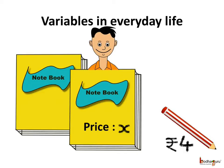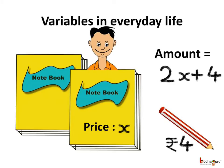assume you bought two notebooks and a pencil costing rupees 4. As we don't know the price of a notebook, let's assume the price is x rupees. Since the price of one notebook is x, we can say the price of two notebooks is equal to 2 times x, that is 2x.